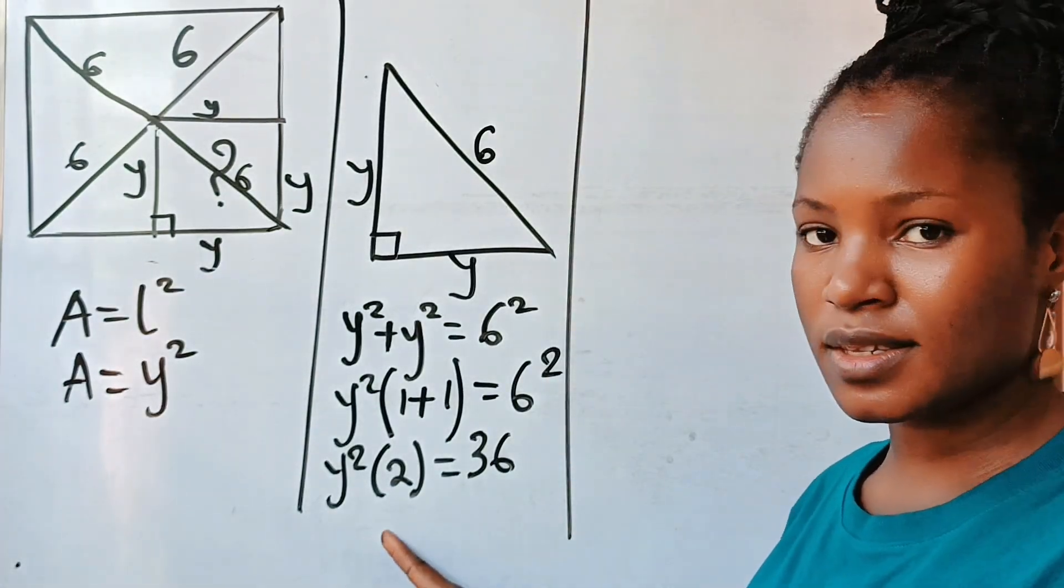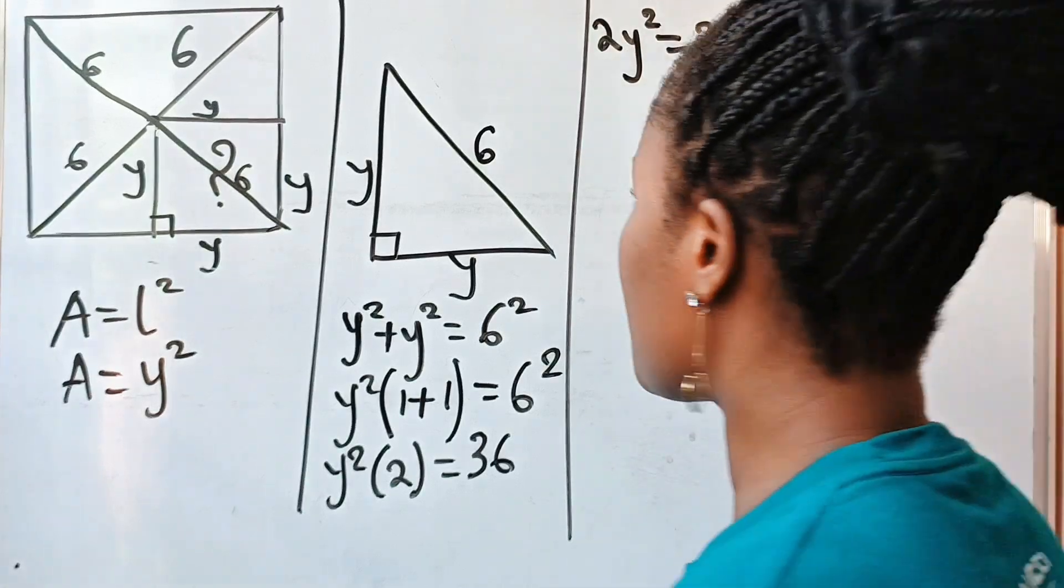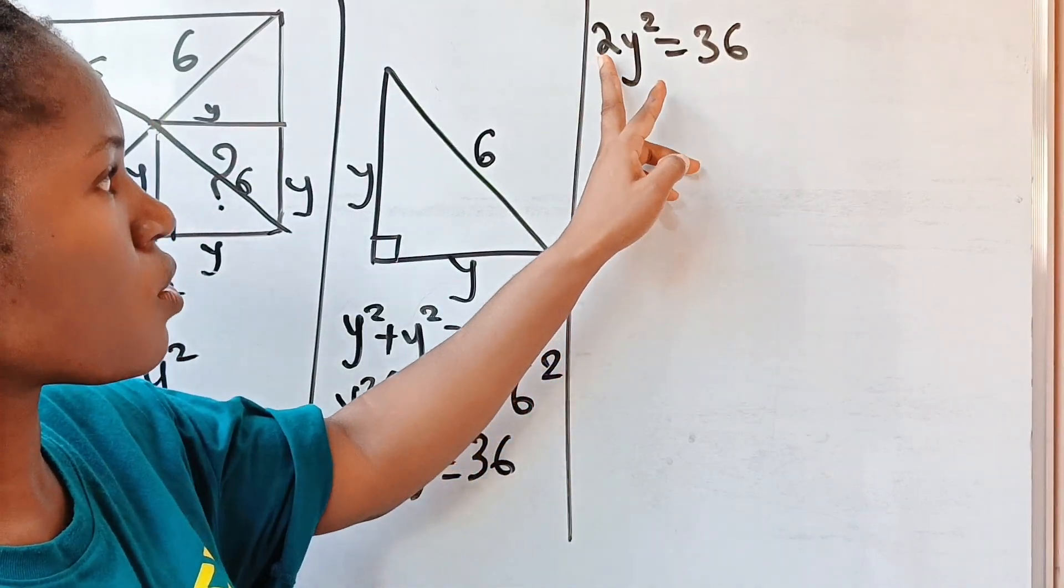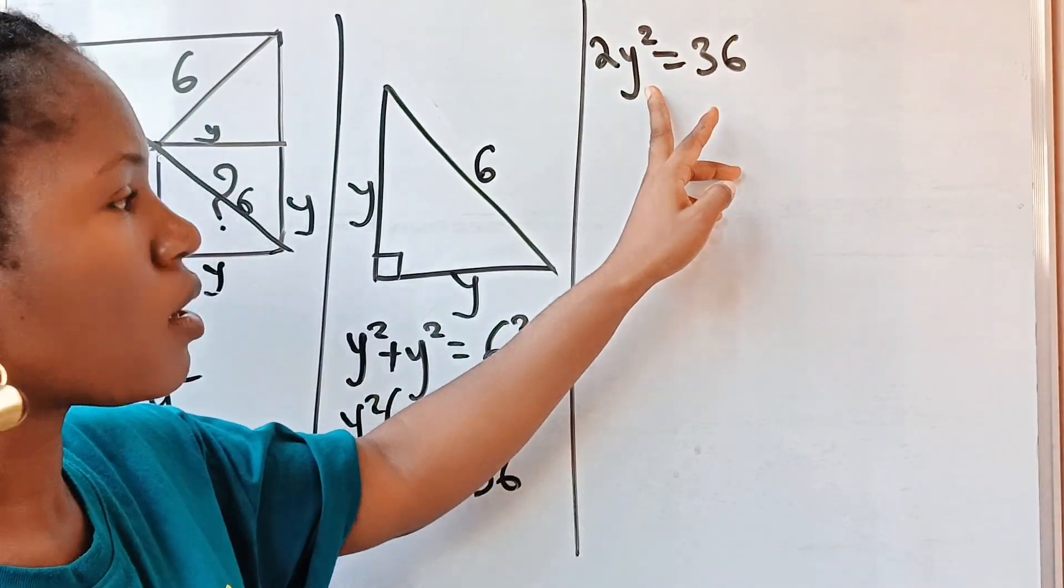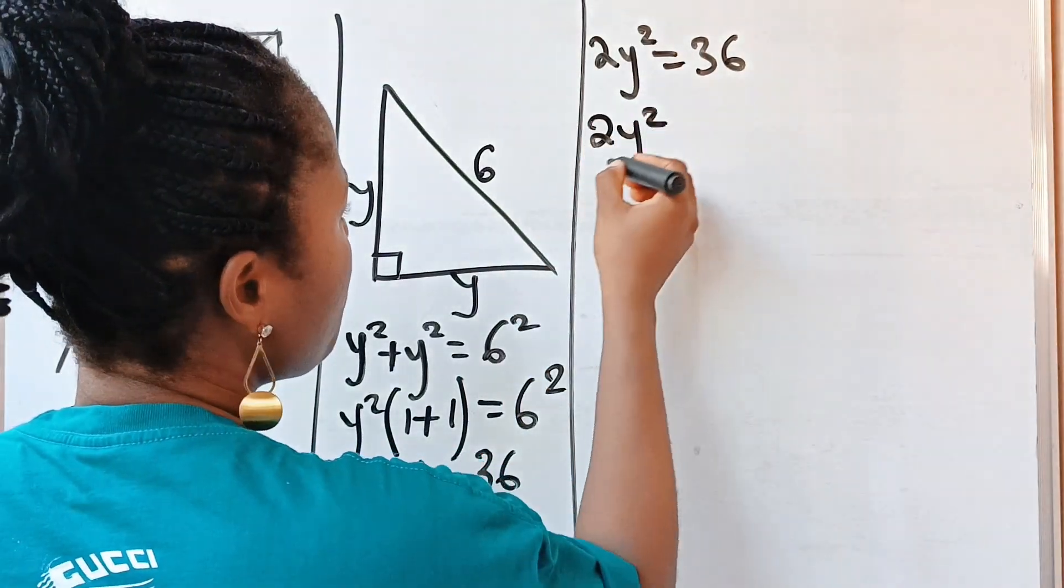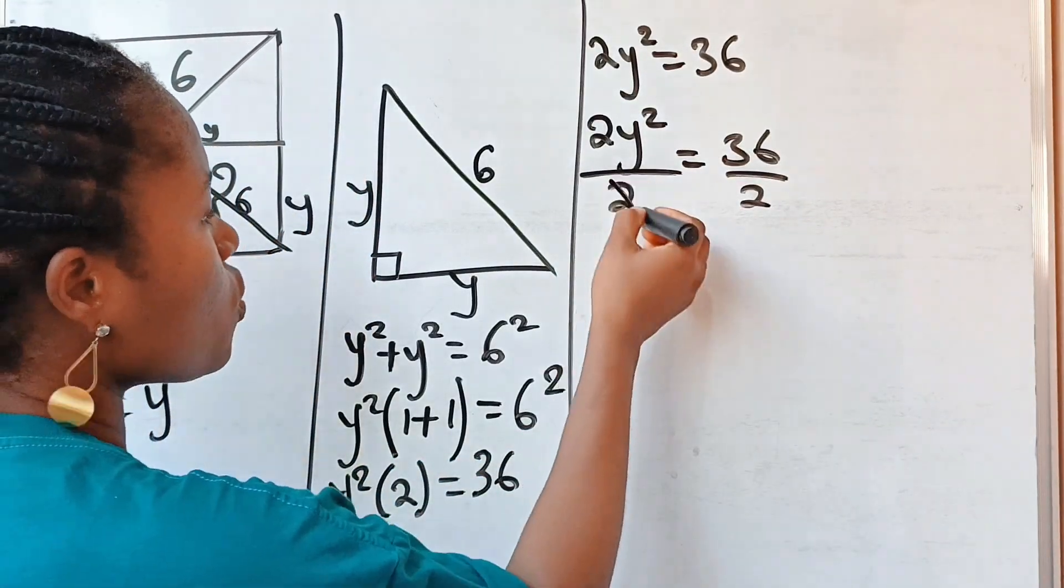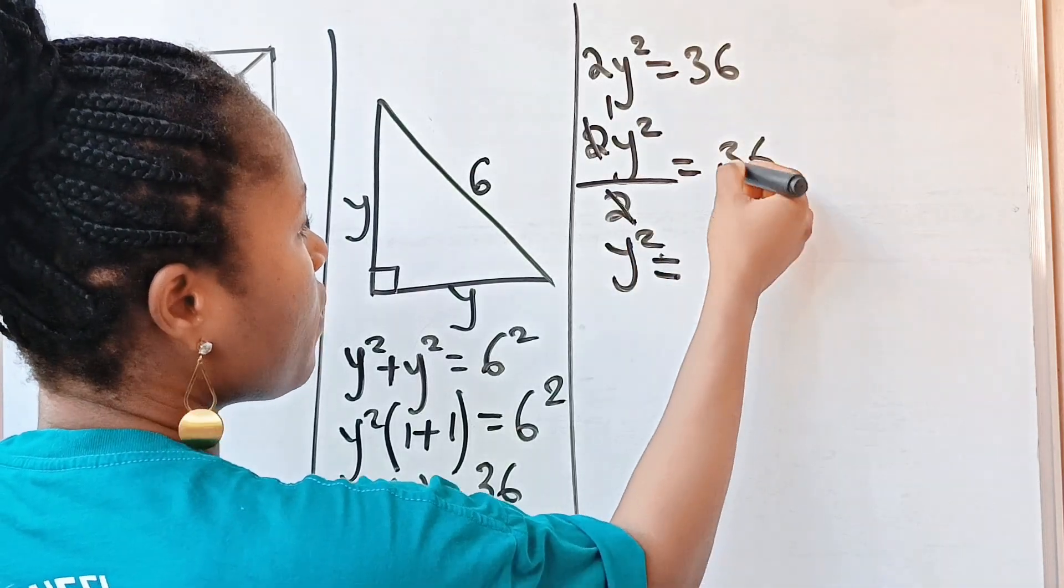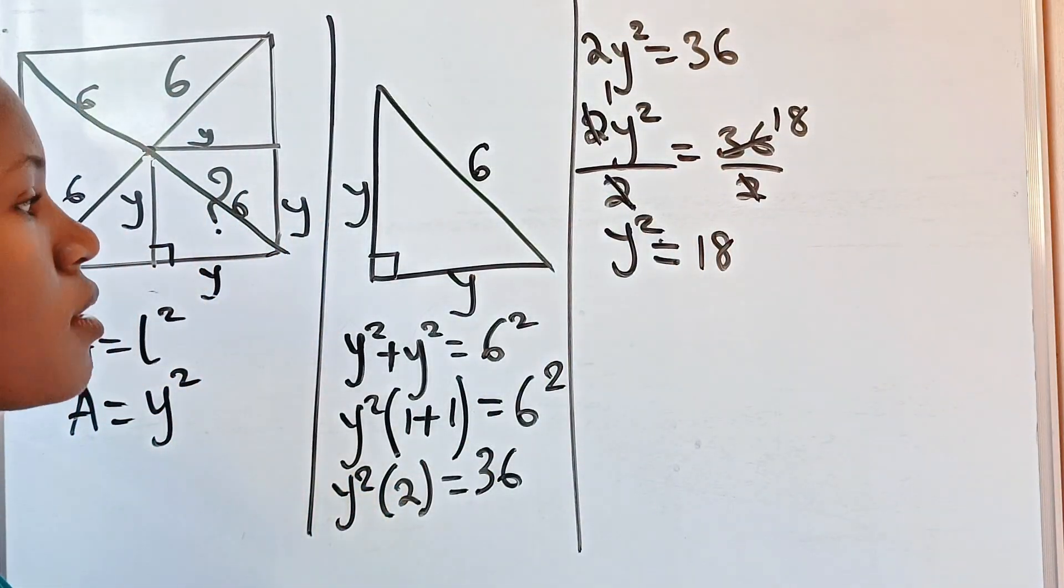So if I should write this, it simply means that 2y squared is equal to 36. Now at this point we are looking for the value of y, so first of all let us divide both sides of this equation by two in order to remove two from here. So we divide both sides of this equation by two, and when we do that we have 2y squared divided by 2 is equal to 36 divided by 2. So two divided by itself gives us one times y squared is y squared, is equal to two divided by 36 to give us 18. So we have y squared is equal to 18.